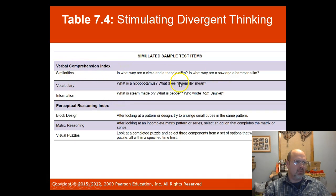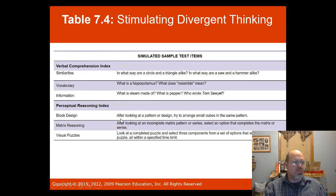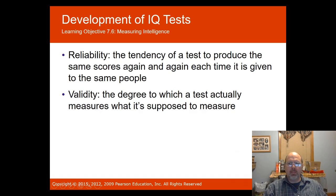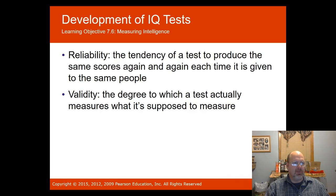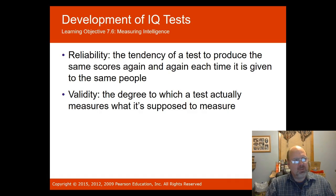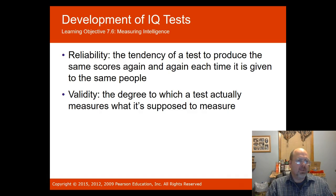When evaluating tests, two important things to consider are reliability and validity. Reliability is the tendency of a test to produce the same scores over and over again each time it's given to the same people — so if I take an IQ test twice, the scores should be pretty similar. Validity is whether a test is actually measuring what it's supposed to measure — does a higher IQ score actually reflect higher intelligence?